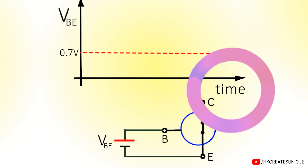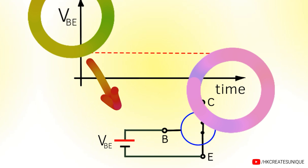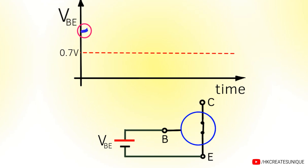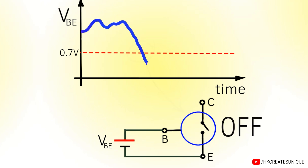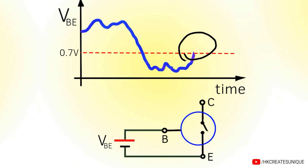It can also be seen graphically. The x-axis shows time and the y-axis shows base-to-emitter voltage. Right now the transistor is on because V_BE is above the threshold level. But as it crosses below this level, the transistor turns off. As the voltage rises again and crosses the threshold level, the transistor turns on.